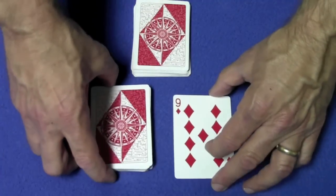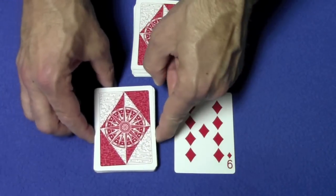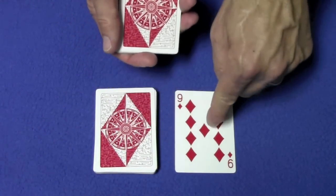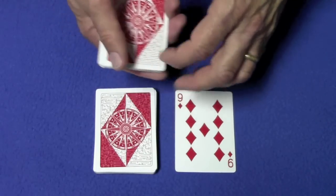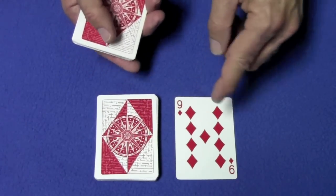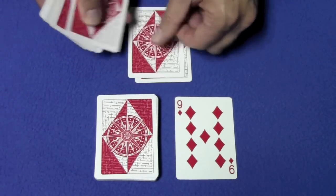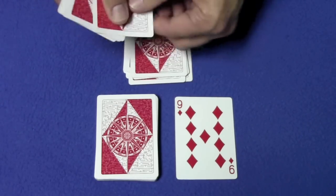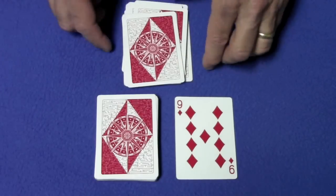Whatever card you selected using your first pile, again I want you to spell that card and then set the rest of the cards on top. I'm going to spell Nine of Diamonds. You spell your card. N-I-N-E-O-F-D-I-A-M-O-N-D-S and set the rest of the cards on top.